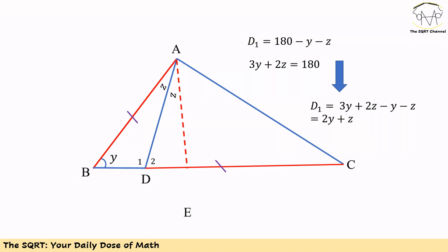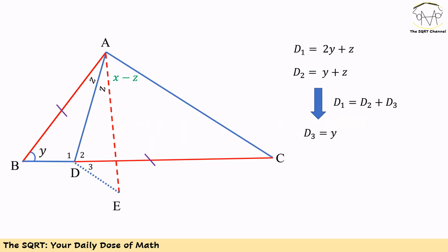We are going to split angle X into two parts: the first part equals Z and the second part equals X minus Z. Now, D1 equals 180° minus Y minus Z, because Z, Y, and D1 are in triangle ABD. Replacing 180° with 3Y+2Z, we get D1 equals 2Y plus Z.